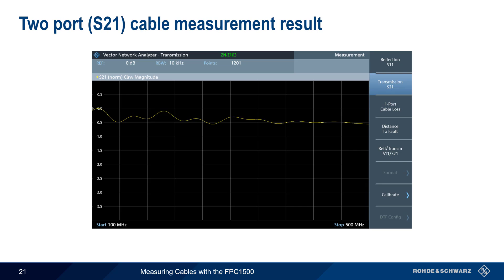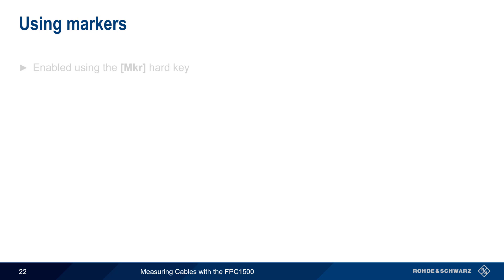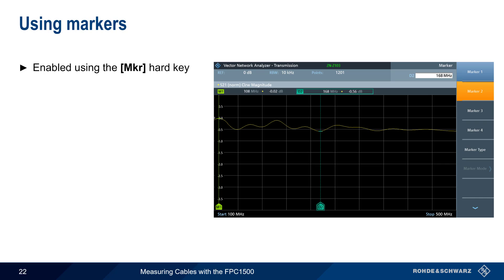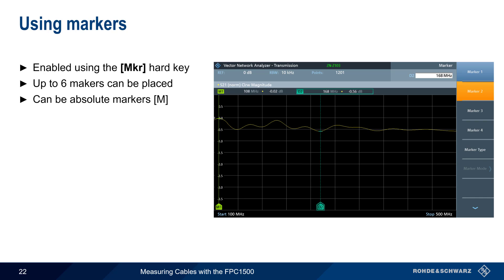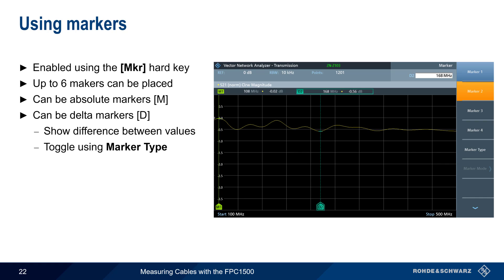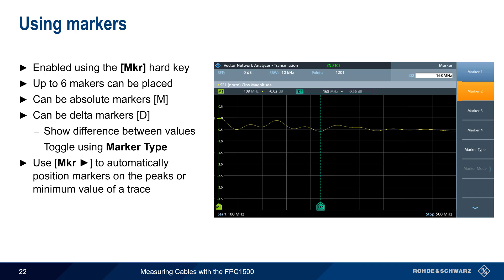Now let's look at a typical two-port or S21 cable measurement. Here again we see a plot of loss as a function of frequency. In order to analyze this in more detail, we can use markers and marker functions. Markers are enabled using the Marker hard key and can be used to examine the frequency-specific characteristics of a cable. Up to six markers can be placed on a trace, and these can be either absolute markers or delta markers, which show the difference between marker values. You can toggle between types using Marker Type. Another Marker hard key is used to automatically place markers on the peak or minimum values of the displayed trace.